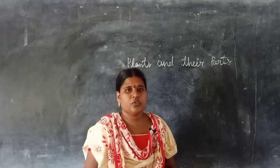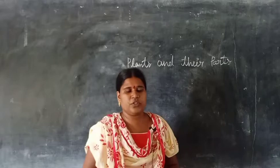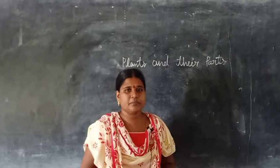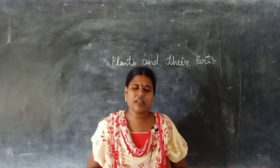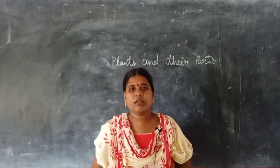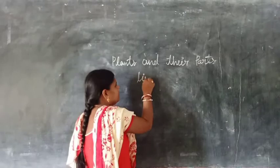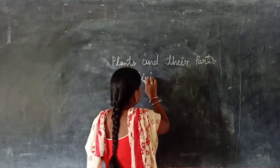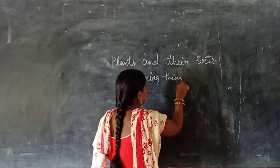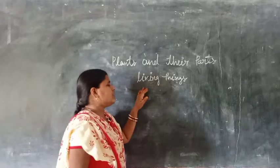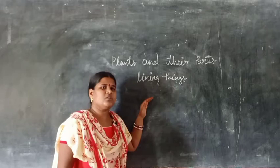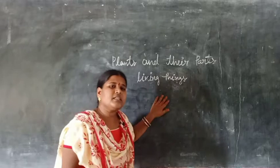Generally, every day we need food. All the birds, animals, and human beings — we all need food. So where do we get the food from? We get the food from plants. These plants we can see everywhere and most of them are green in colour. So are plants a living thing or a non-living thing? Plants are also living things. They can breathe, they can grow, and they can reproduce. That's why plants are also living things.